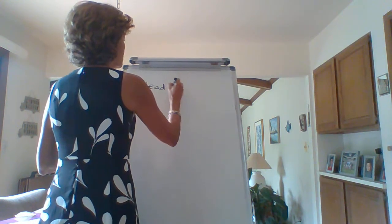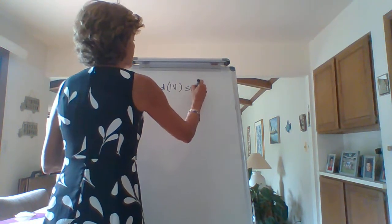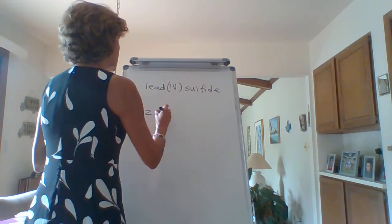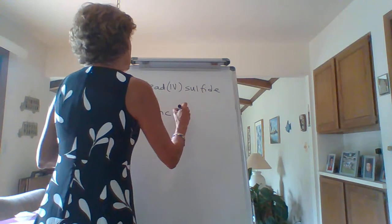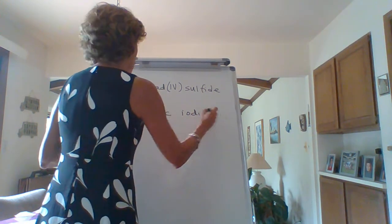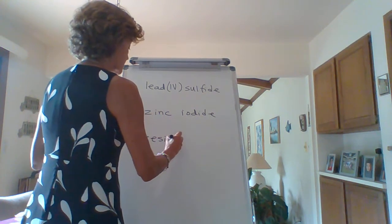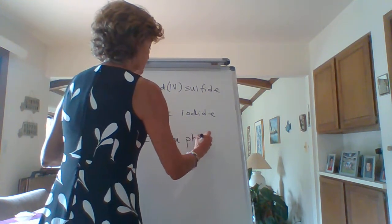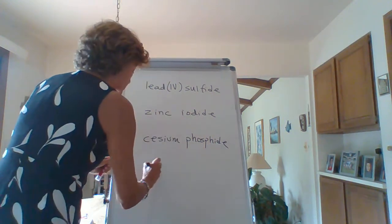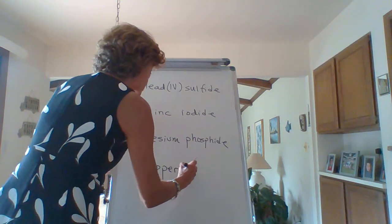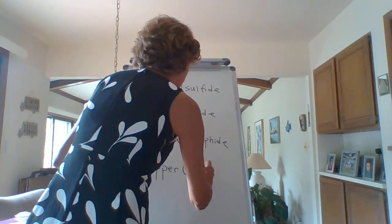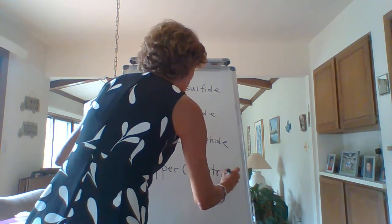So I'm going to write a few down for you. Lead, Roman numeral 4, sulfide. Zinc iodide. Cesium phosphide. Copper, Roman numeral 1, nitride.